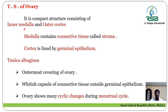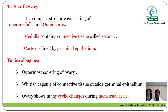The medulla consists of connective tissue called the stroma. The medulla, which is the innermost part, contains connective tissue called stroma. The outer part of the ovary is lined by germinal epithelial cells — that is the cortex — and it is lined by germinal epithelial cells. The outermost covering of the ovary is called the tunica albuginea, which is present around the cortex.